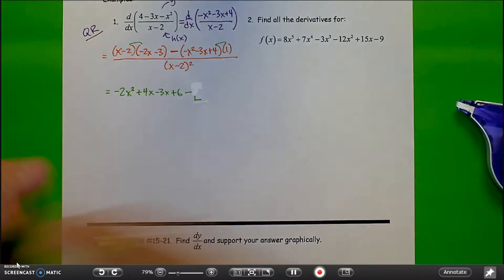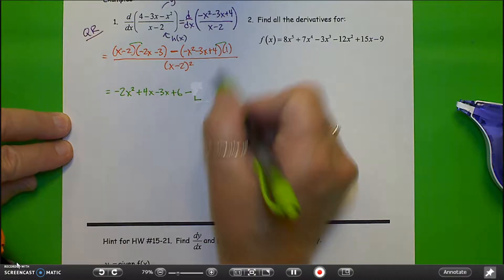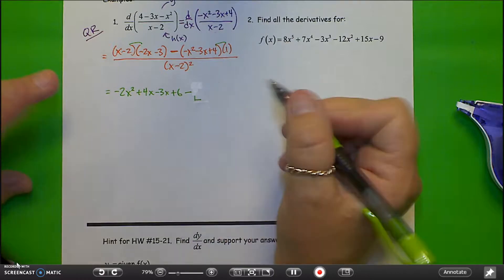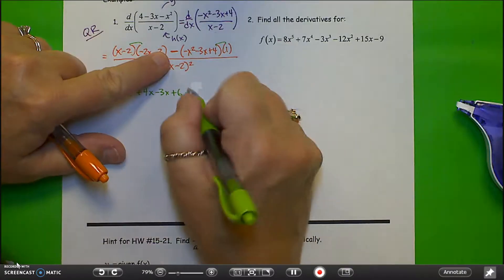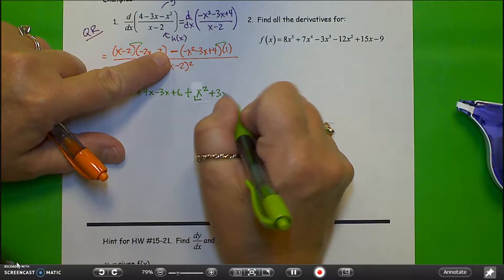If I did have something here to distribute, I'd want to set parentheses, distribute, and then take care of the negative sign last, because I certainly don't want to have a sign error.